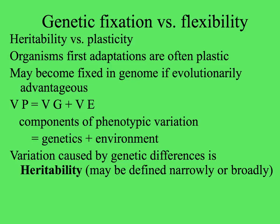Some traits are heritable, but part of the phenotype of an individual is shaped just by response to the environment. The first adaptations that organisms make to the environment are often plastic, but these changes can become fixed in their genome if it's evolutionarily advantageous. Variation in the phenotype equals variation in the genotype plus variation from the environment — or more precisely, variance. The genetic differences that cause this variation are heritable.